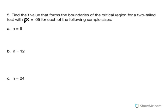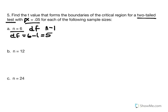The things we need to know when using the t-table are: first, are we using a one- or two-tailed test — in this case it's two-tailed; second, the alpha level — in this case 5%; and third, our sample size. We enter the t-table using degrees of freedom, which is calculated as n minus 1. With n equal to 6, degrees of freedom equal 5.